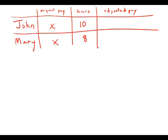So essentially we want to express X in terms of Y. Mary's adjusted pay was X minus Y after she paid John Y. And John received this payment of Y so his adjusted pay is X plus Y. And now the hourly wages are the same.